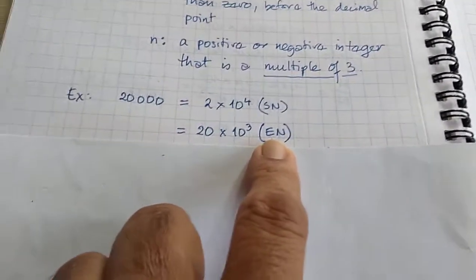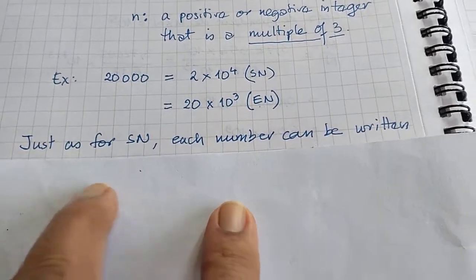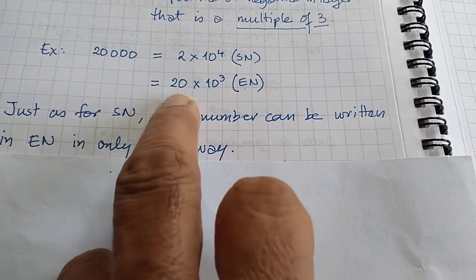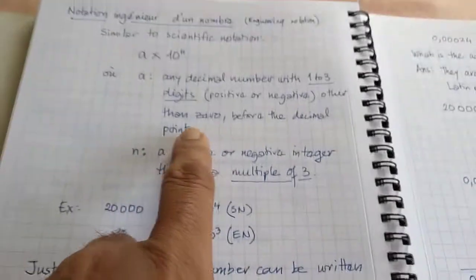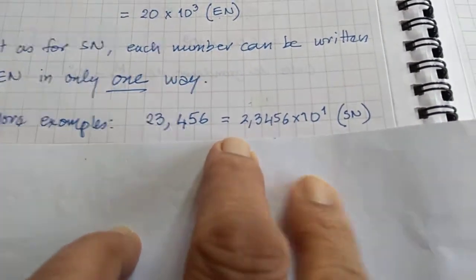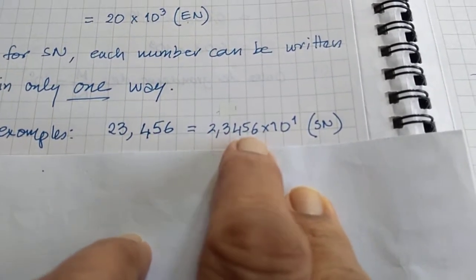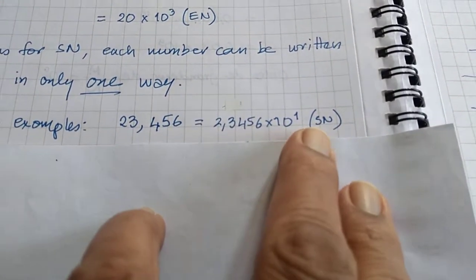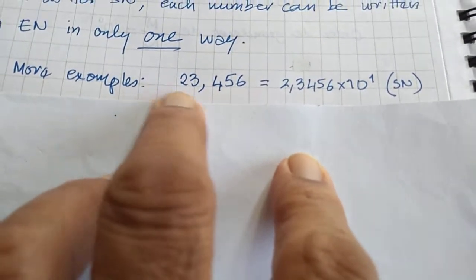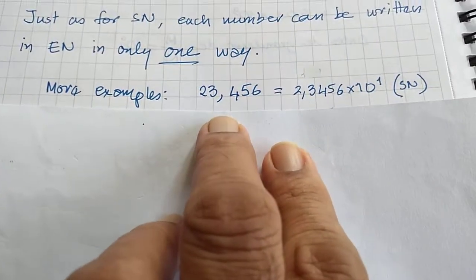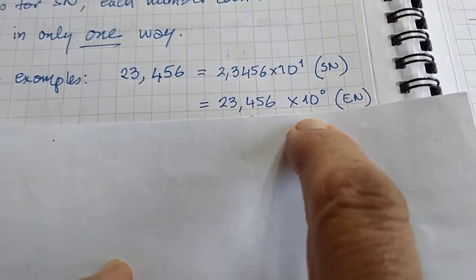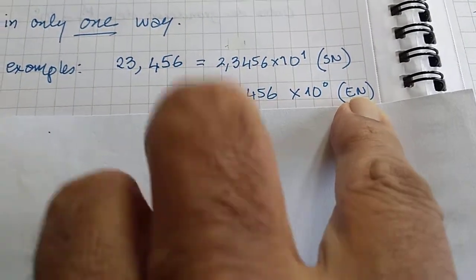What is the benefit of engineering notation? We will come to that in a couple of minutes. Just as for scientific notation, each number can be written in engineering notation in only one way. So take 23.456 — in scientific notation it is 2.3456×10^1. For engineering notation, it is already between 1 and 999 before the decimal, so we leave it as 23.456×10^0.